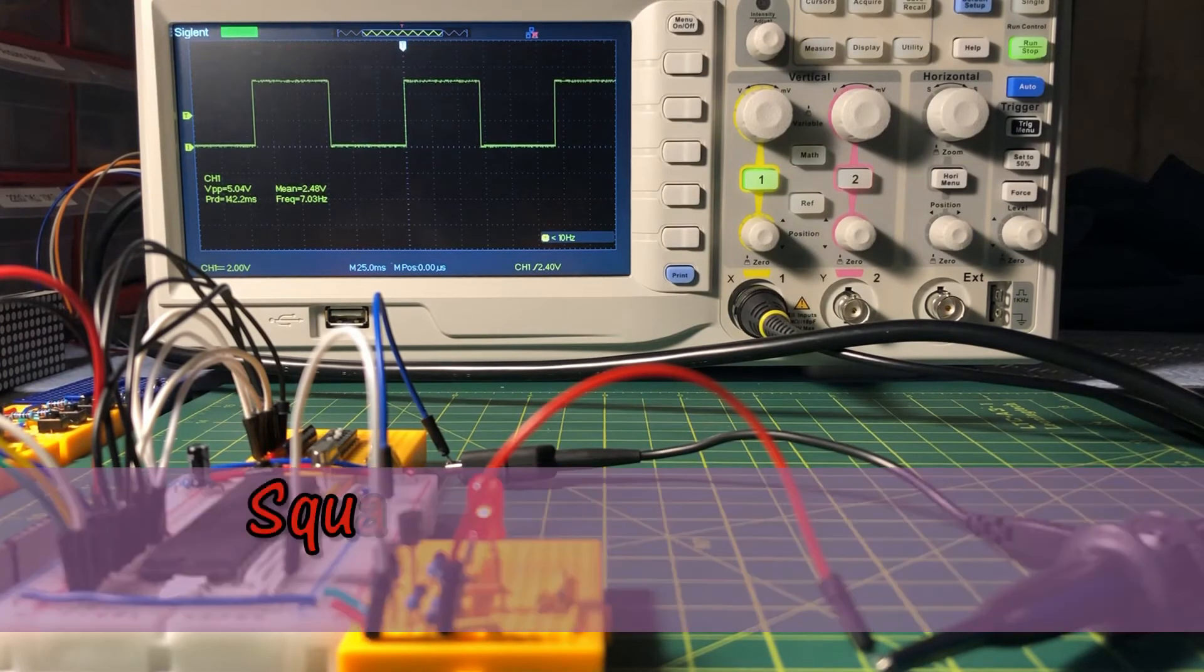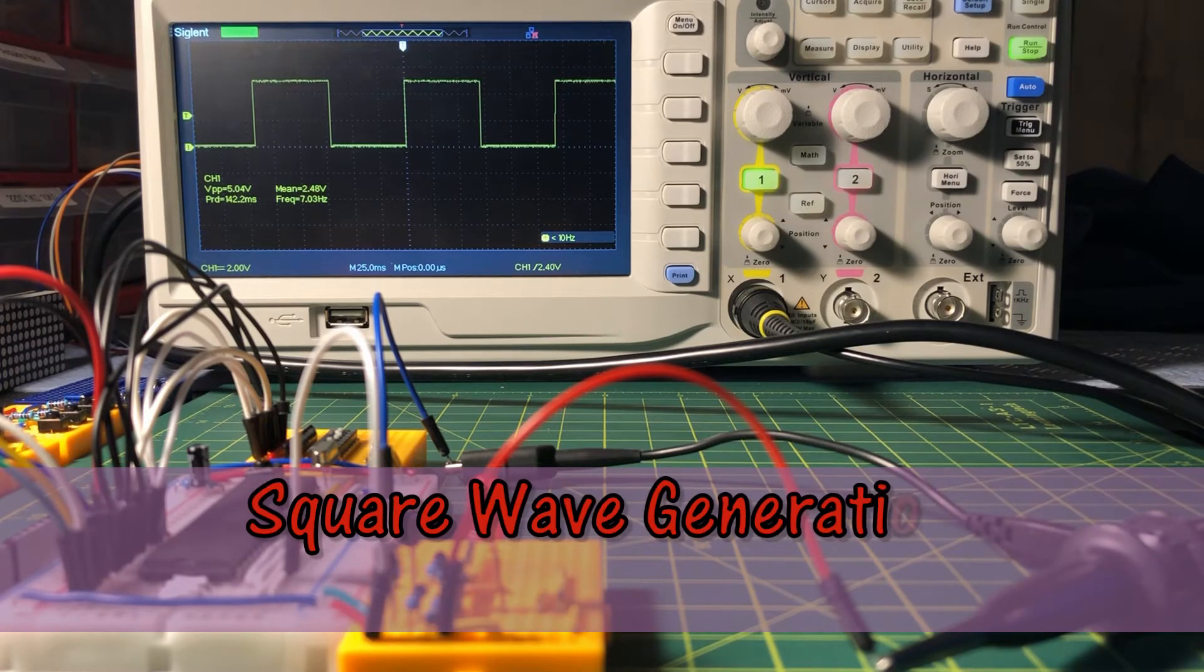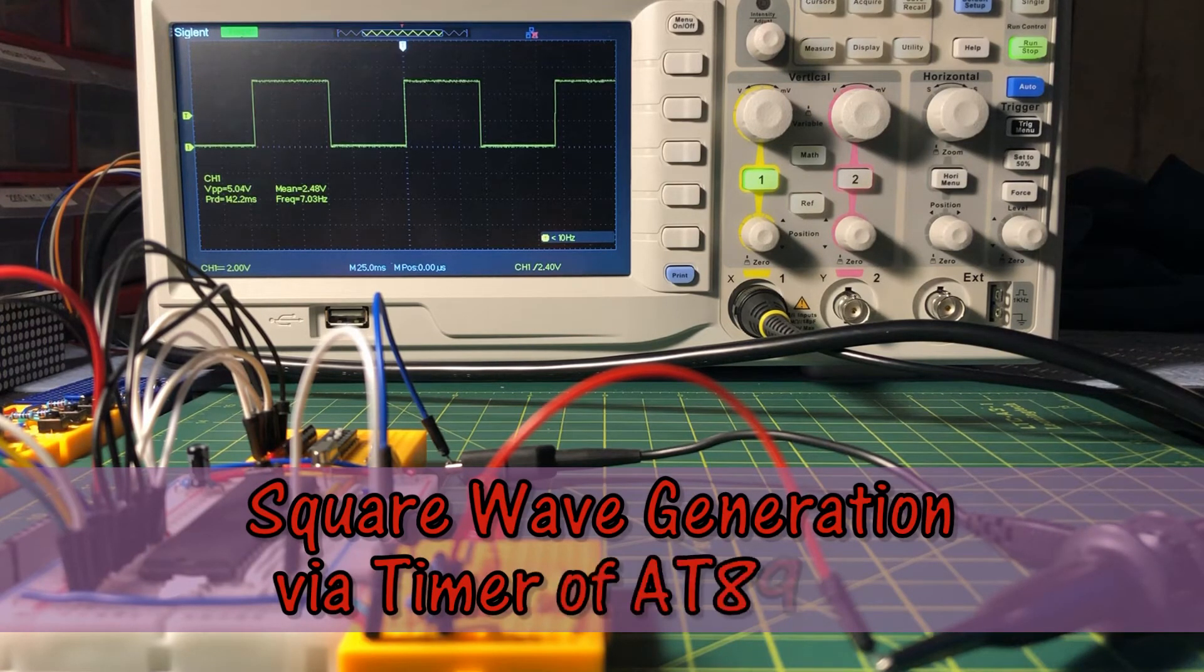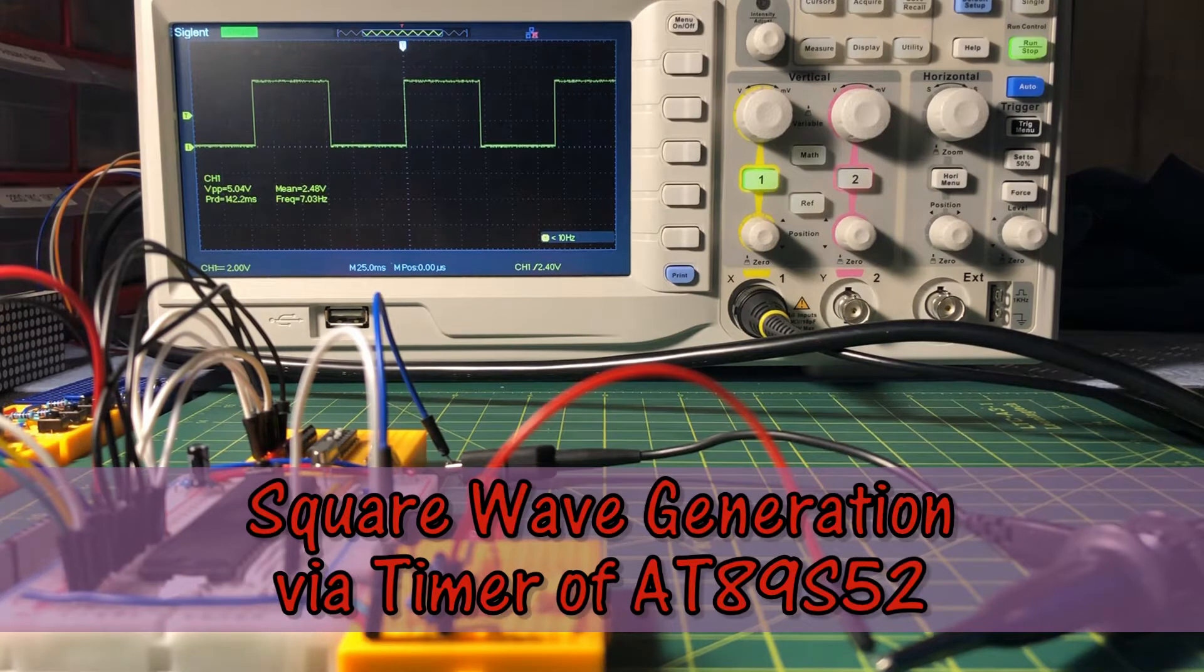In this video, the AT89S52 microcontroller is programmed using assembly to generate square waveforms using built-in timers.